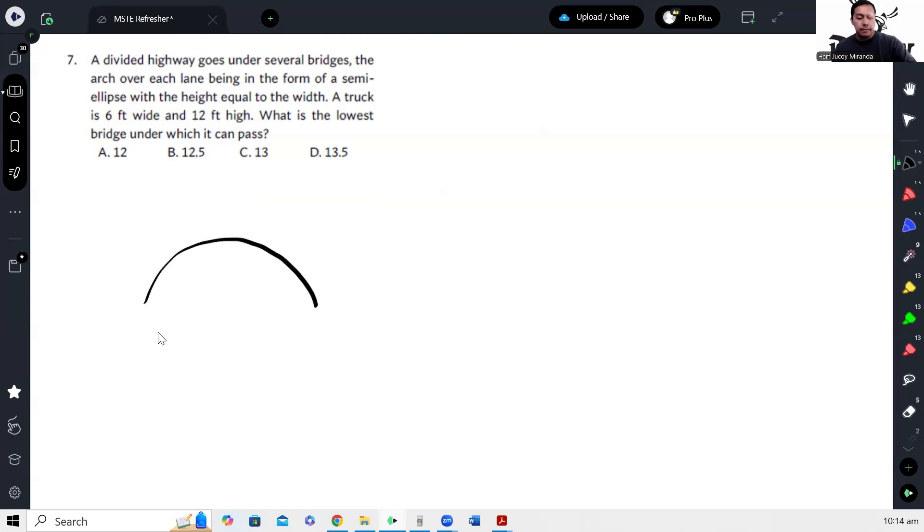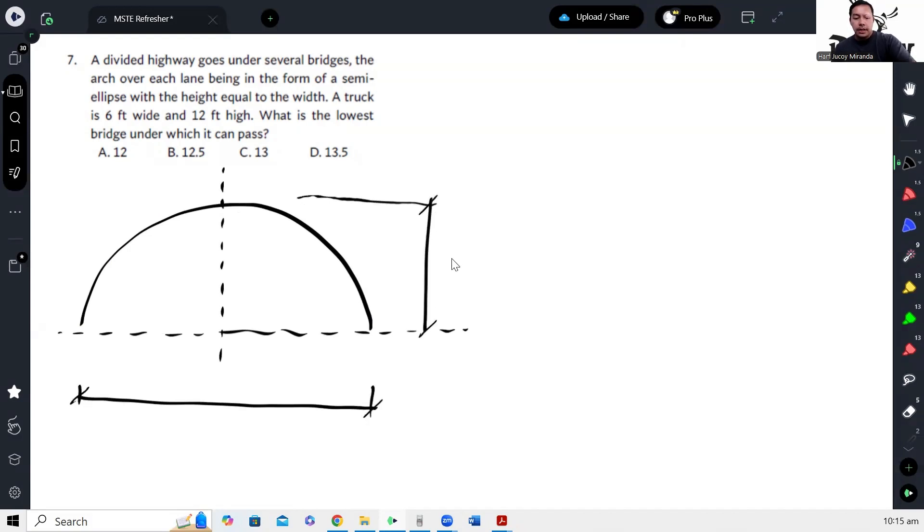Okay, so here's the setup. This is the semi-ellipse, this is our road, and here's the center. Then there's a truck passing through here that's 12 feet wide and 6 feet high. So as stated in the problem, these are equal - the height and width are equal.